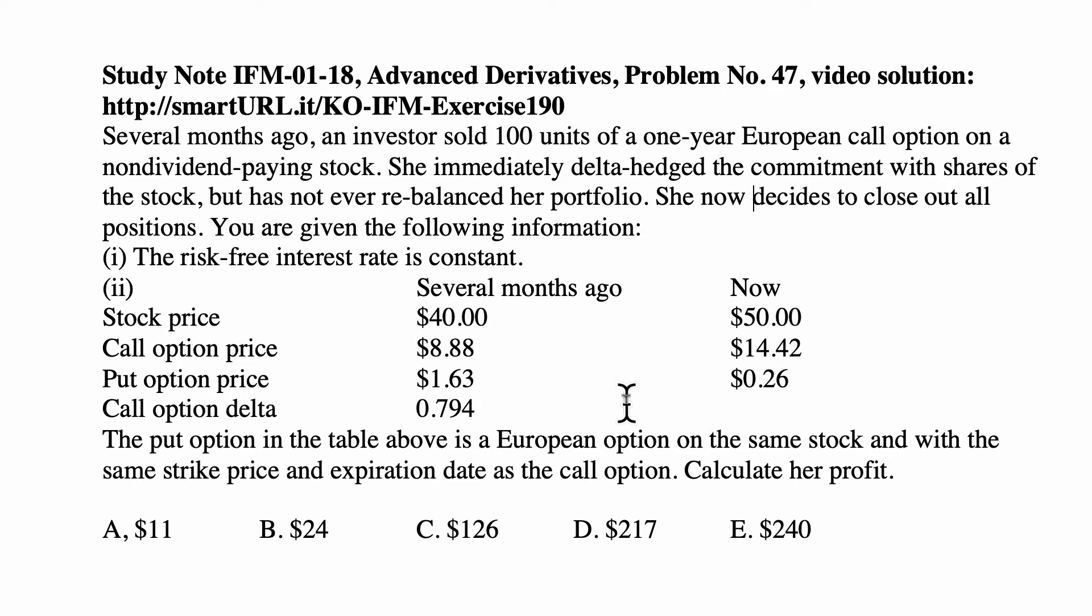The risk-free interest rate is constant. We have stock price, call option price, put option price, and call option delta several months ago: $40, $8.88, $1.63, and call option delta 0.794.